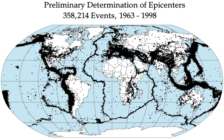The ten largest recorded earthquakes have all been megathrust earthquakes; however, of these ten, only the 2004 Indian Ocean earthquake is simultaneously one of the deadliest earthquakes in history. Earthquakes that caused the greatest loss of life, while powerful, were deadly because of their proximity to either heavily populated areas or the ocean, where earthquakes often create tsunamis that can devastate communities thousands of kilometers away. Regions most at risk for great loss of life include those where earthquakes are relatively rare but powerful, and poor regions with lax, unenforced, or non-existent seismic building codes.